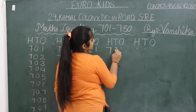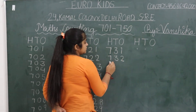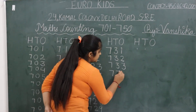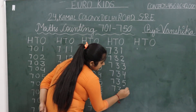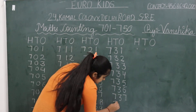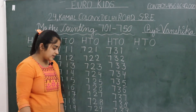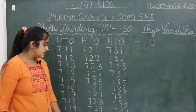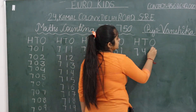Now 7 stays as it is and after 30 comes 31. Understood? 731, 732, 733. Are you getting me? 734, 735, 736, 737, 738, 739. And what comes last? 7 stays as it is, after 39 comes 40. Understood? Next what comes, children? 7 stays as it is, after 40 comes 41. Understood?